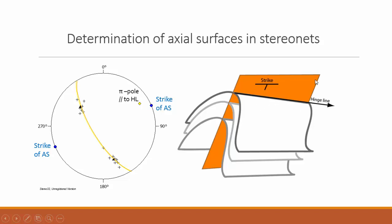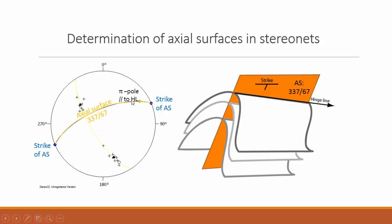The hinge line is also part of the axial surface. We know the hinge line; we need the strike of the axial surface, which we plot into the stereo net as a strike line — it always plots at opposite points on the perimeter. All we then have to do is construct a great circle connecting the strike orientation (a blue dot) with the hinge line. Once we have constructed this great circle we can determine its coordinates — in this example 337/67.